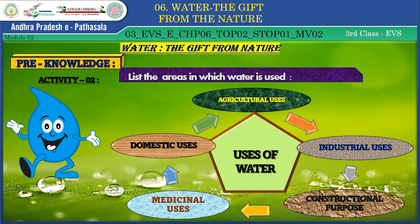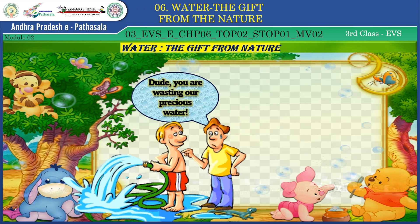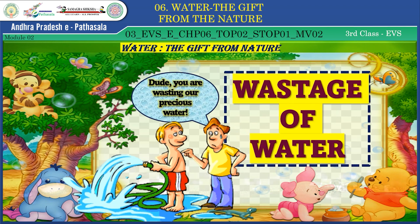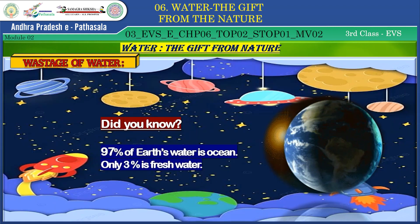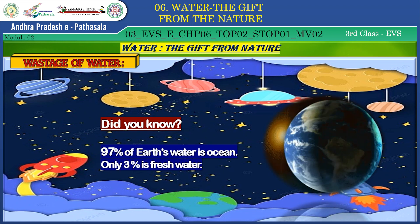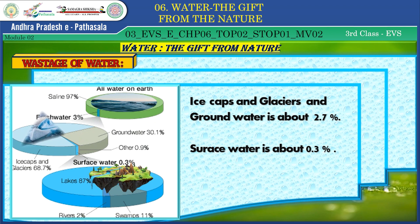Do you want to know why water shortage is occurring? To know that, we have to understand wastage of water. We have so many water sources yet are facing water shortage. Here is why: 97% of water is in oceans and 3% is fresh water. From that 3%, glaciers and groundwater account for about 2.7%, and only the remaining 0.3% is accessible for our daily needs.